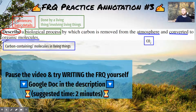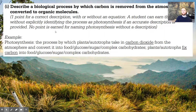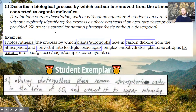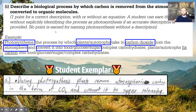Go ahead and take a minute to try writing FRQ number three — suggested timing is also about two minutes. In this case there's really only one correct answer, and it has a few really important parts: photosynthesis done by plants to take in carbon dioxide — you have to say carbon dioxide, not just carbon — and convert it into glucose. Looking at the student exemplar, they have all of those key parts and earn the point. Notice their answer was actually cut off mid-sentence — they had more to say, but they didn't need it. Once the reader sees all necessary components, you've earned the point.